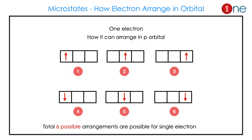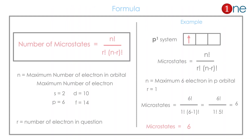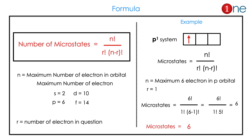How many possibilities of arrangements? This is actually a mathematical problem. The formula for microstates is n factorial divided by r factorial times (n minus r) factorial, where n is the maximum number of electrons and r is the number of electrons in question.